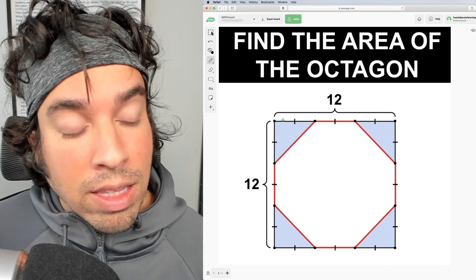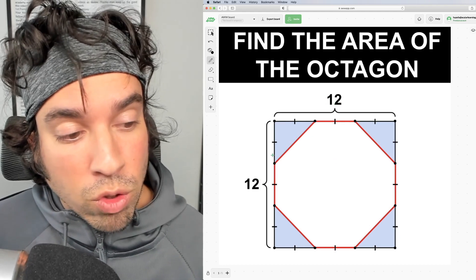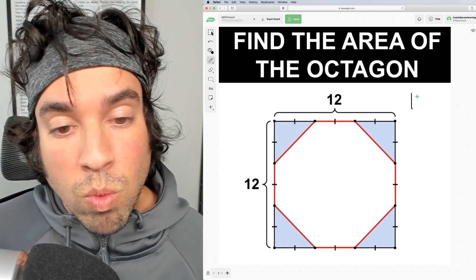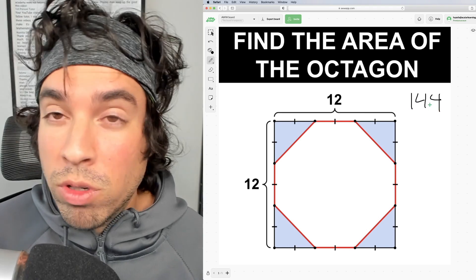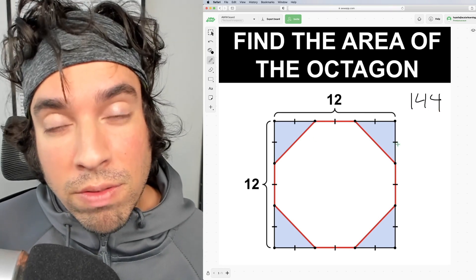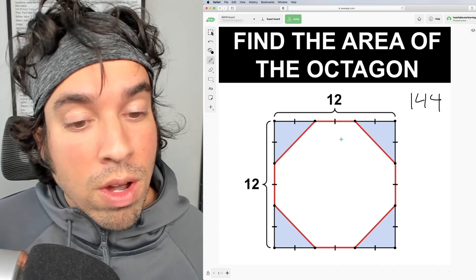The entire area can be found by multiplying 12 by 12, which is of course 144. Now we want to find the area of these triangles and subtract them. So how do we do that?